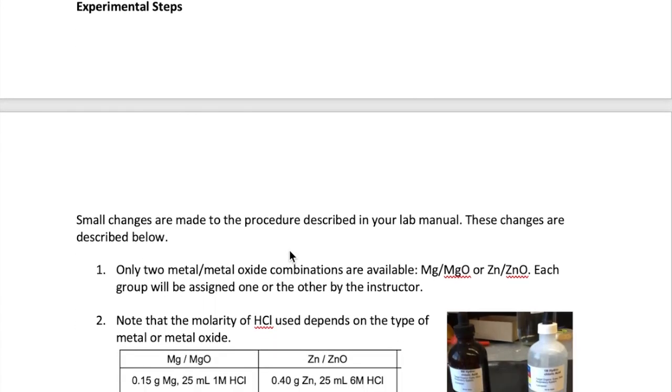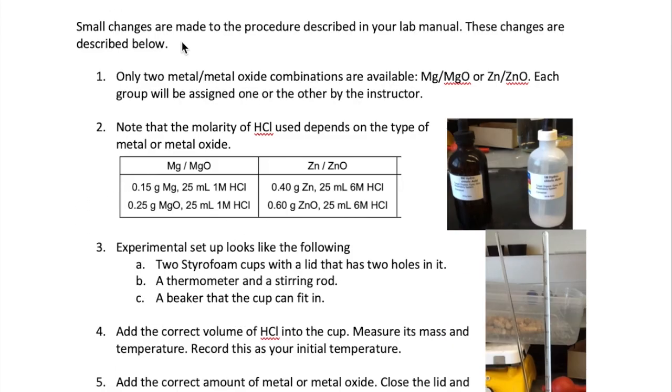So that's how you will carry out the calculations in today's lab. Let's now look at the actual experimental steps. Most of the steps in your lab manual are correct, but there are slight changes which I will describe below. First, instead of three metal-metal oxide combinations as described in your lab manual, you're only going to have two. So each group can work either with magnesium-magnesium oxide combination or zinc-zinc oxide combination. You're going to be assigned the specific combination in lab. Very importantly, the concentration of HCl you would have to use depends on the metal-metal oxide combination. As you can see, you only need a 1 molar HCl for the magnesium-magnesium oxide combination, while you will need a 6 molar HCl for the zinc-zinc oxide combination. The bottles of HCl with the two concentrations are shown here to make sure that you don't confuse them.